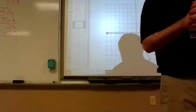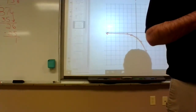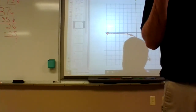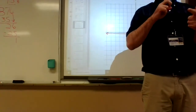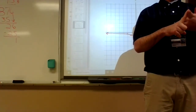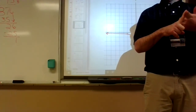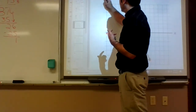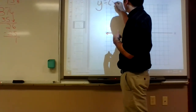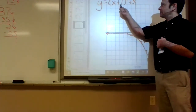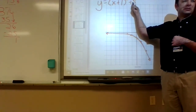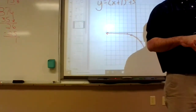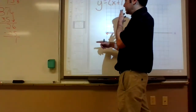Arrows on a graph mean they keep going forever. Number nine is kind of a trick question. When you put a plus one directly on the x — like 2^(x+1) — what happens to the graph? It moves left one. Remember: y equals (x+1)^2 plus 3 means left one, up three. So number nine moves the graph left one from number one.